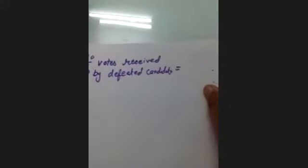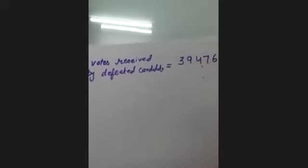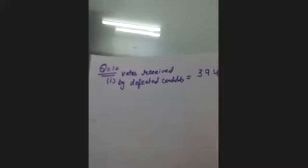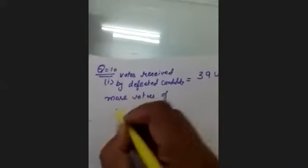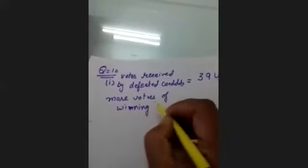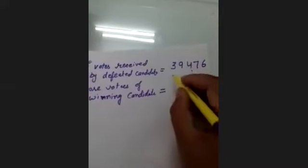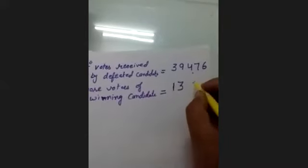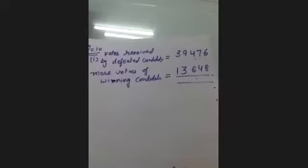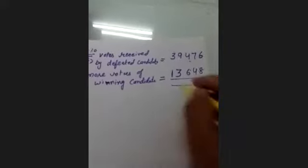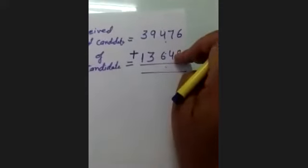Tenth question, first part. Votes received by defeated candidate: 39,476. More votes of winning candidate: 13,648. To find votes received by winning candidate, we add these two numbers.